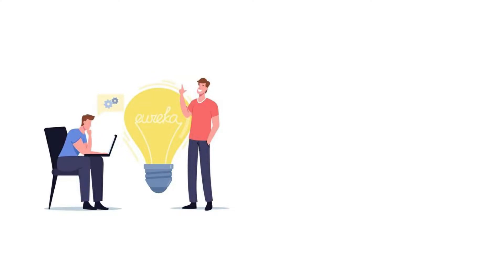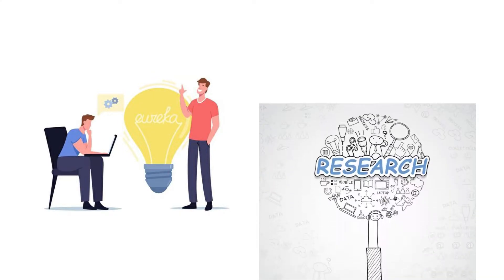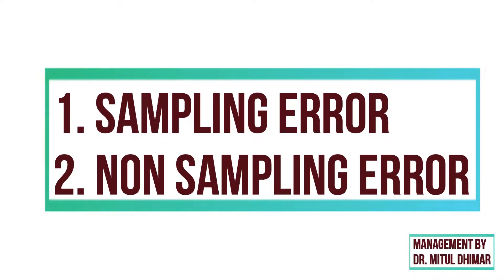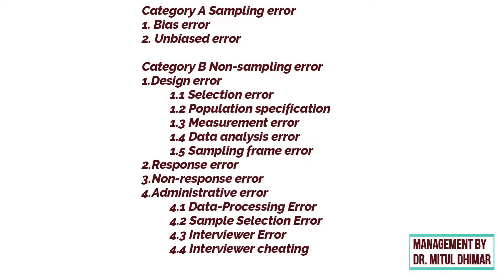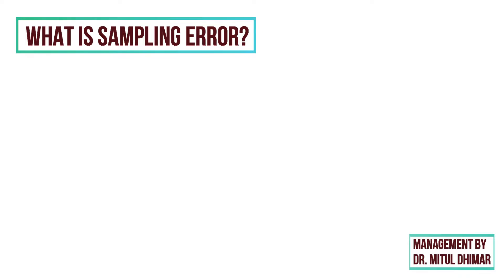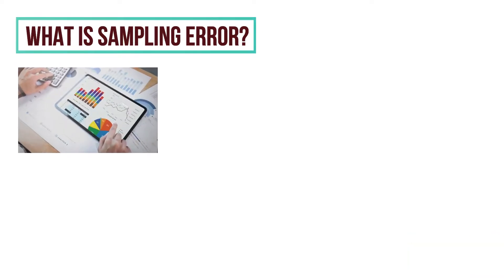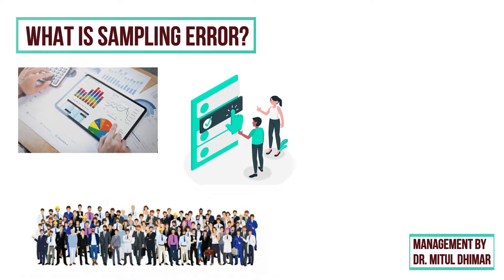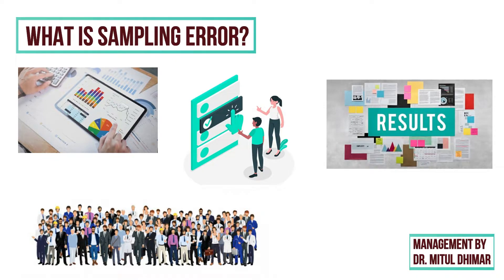Hello friends, today we are going to understand one of the important topics of research methodology — that is sampling error. There are two types of errors: sampling and non-sampling errors. A sampling error is a statistical error that occurs when an analyst does not select a sample that represents the entire population of data. As a result, the results found in the sample do not represent the results that would be obtained from the entire population.